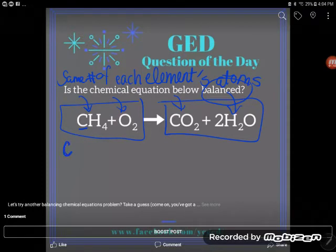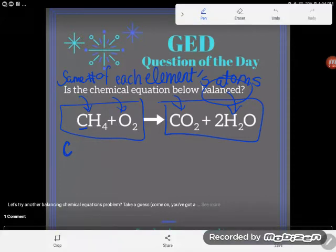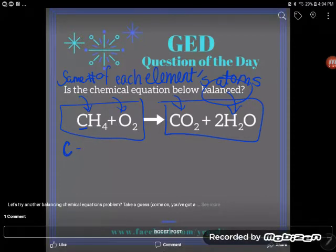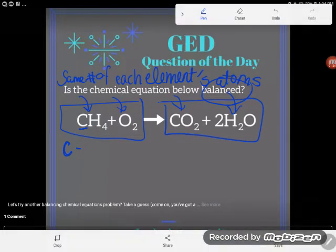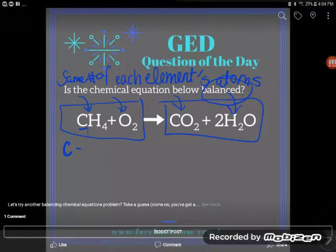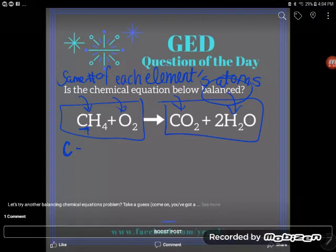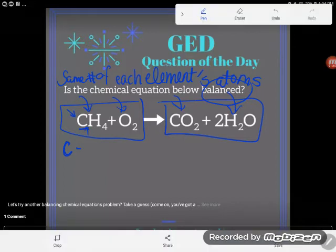Remembering that each capital letter represents the start of a new element, C is capital and C is the element carbon. You don't need to know that, but you do need to be able to count how many carbons we have. Notice no subscript, no number down below, no coefficient, no number multiplying out in front—always assume one when you don't see a number.